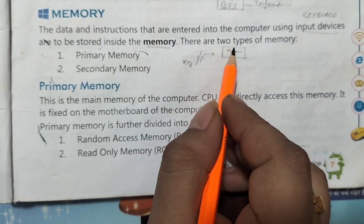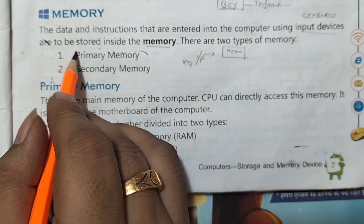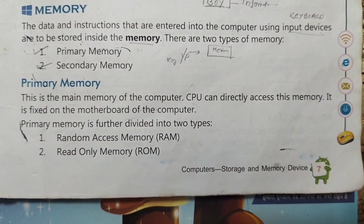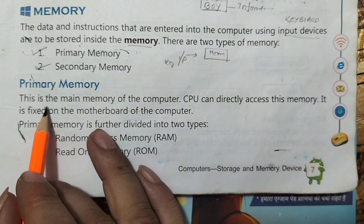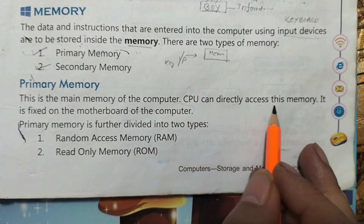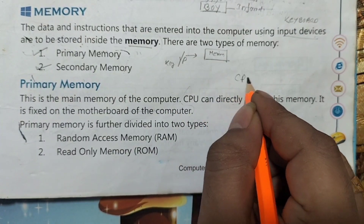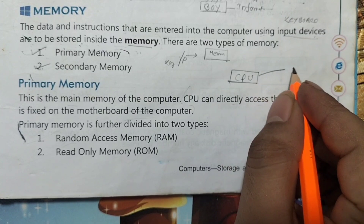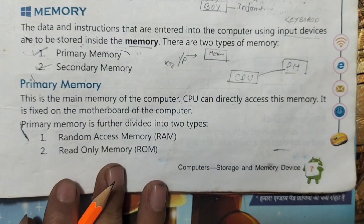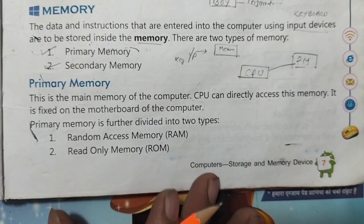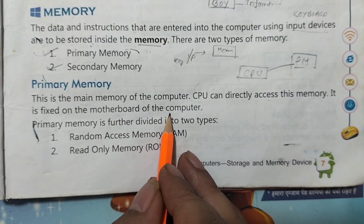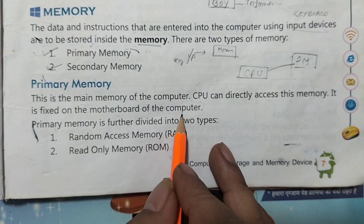There are two types of memory: primary memory and secondary memory. Primary memory is the main memory of the computer. The CPU can directly access this memory — that is its main advantage. It is fixed on the motherboard of the computer, which is why it is more costly.